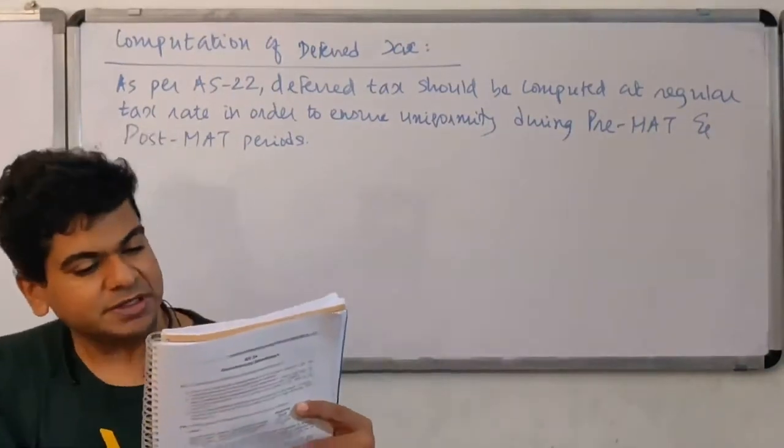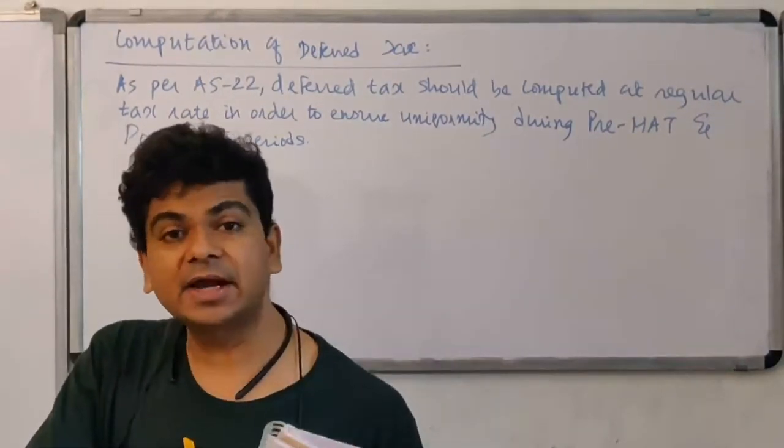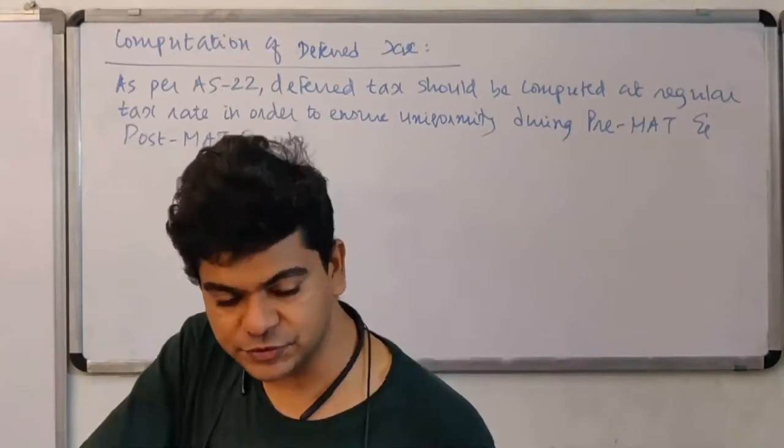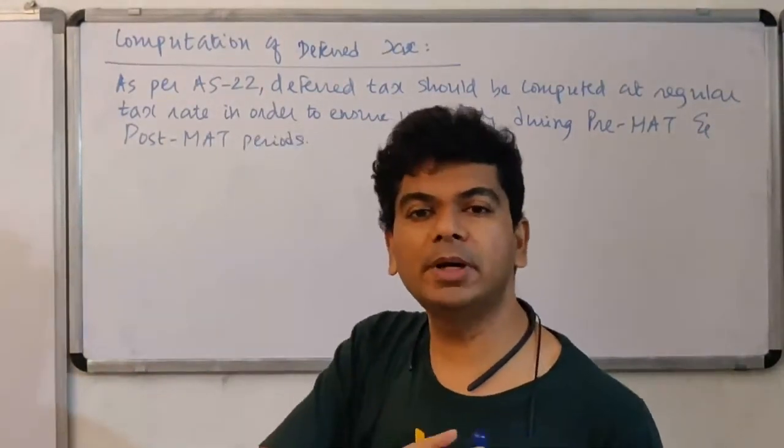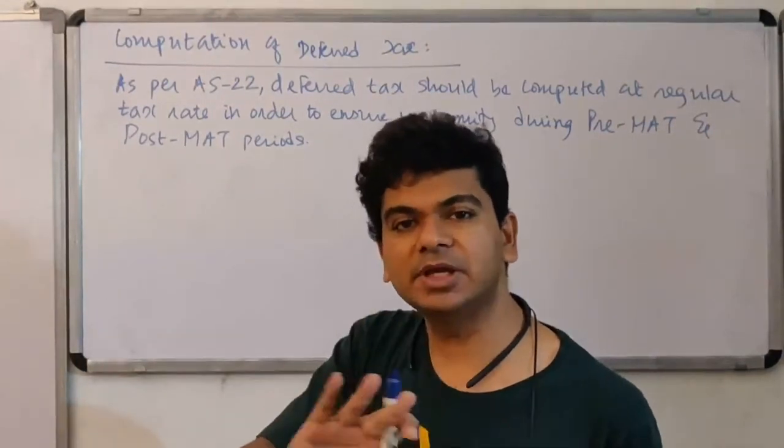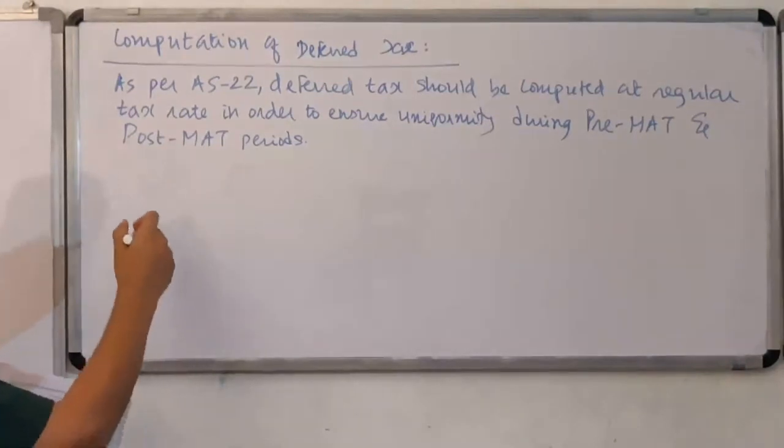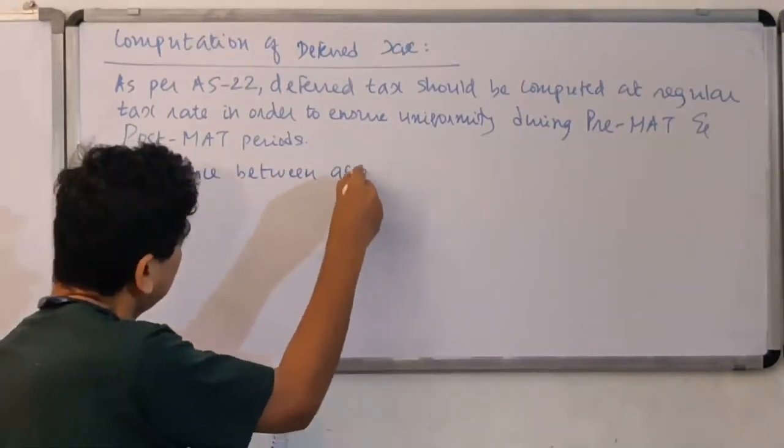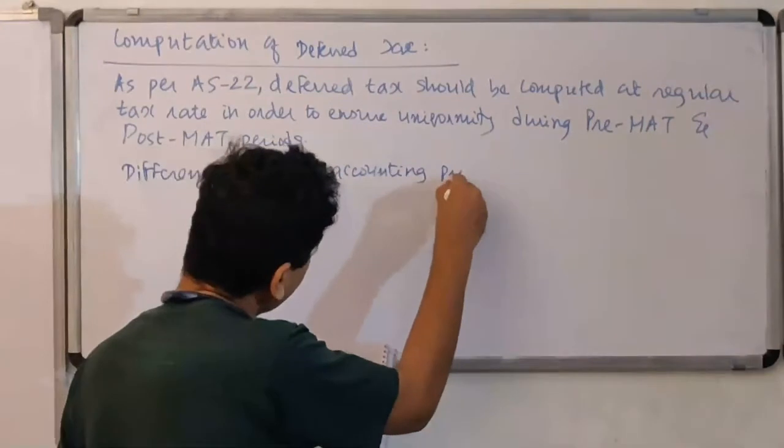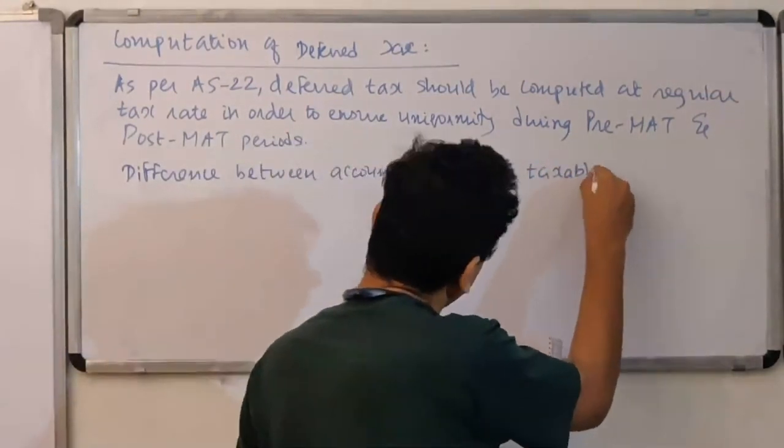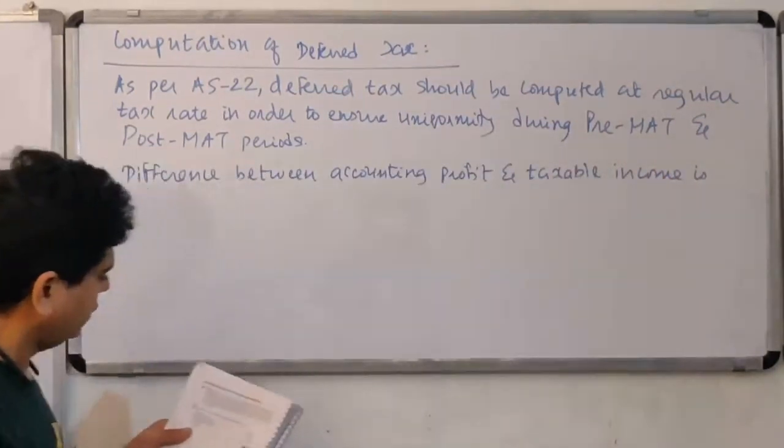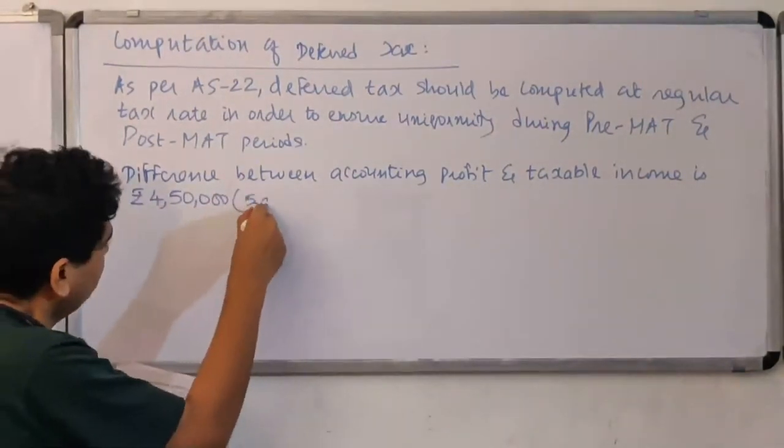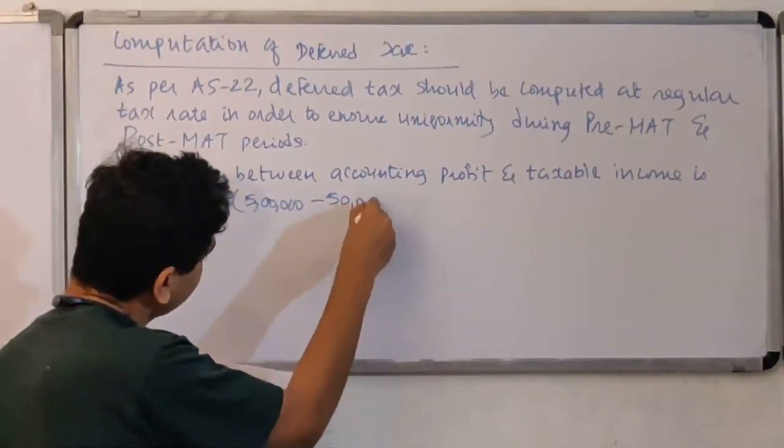Now if you see, your accounting profit is 5 lakhs and the profit as per the income tax act is 50,000. So 5 lakhs minus 50,000, that is representing your timing difference. Of course, we are assuming that there are no permanent differences. Entire difference is timing difference. So we put a formula. We say difference between accounting profit and taxable income is Rupees 4 lakhs 50,000. 5 lakhs minus 50,000.